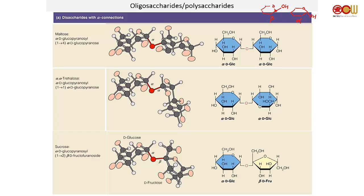Yesterday we went through common disaccharides with alpha connections. What you can see is that in all three examples, you have the alpha anomer of the sugar that's on the left. The bonding is alpha 1-to-4, referring to the alpha anomer of the left-side sugar.